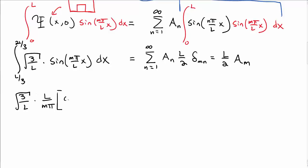So then, doing that integral, I get something that looks like L over m pi, cosine of 2m pi over 3, minus cosine of m pi over 3. The right-hand side I bring down is L over 2, a sub m.